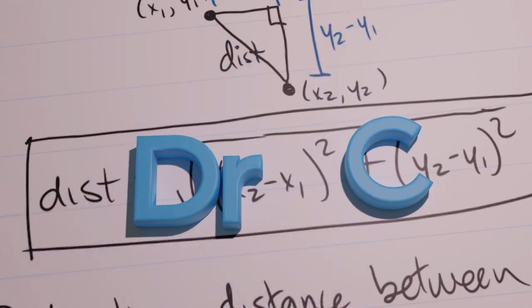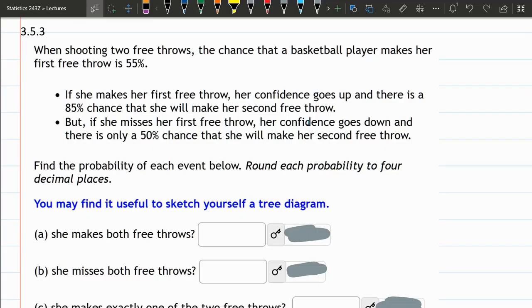We now have a question about shooting free throws. There's a basketball player making her first free throw 55% of the time, but her second free throw probability is different. It's either 85% if she made her first, or 50% if she missed her first.